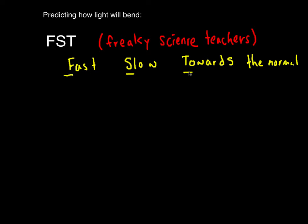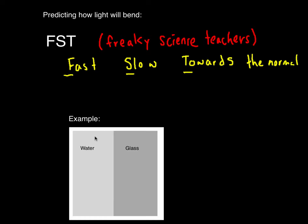So if light comes from a fast medium going to a slow medium, it will bend towards the normal — FST. Here's an example: going from water, which is a fast medium, to glass, which is a slow medium, we know that light will bend towards the normal line. We start by drawing in the normal line, and when a light ray comes in towards the boundary between the two media, it will bend towards the normal line.